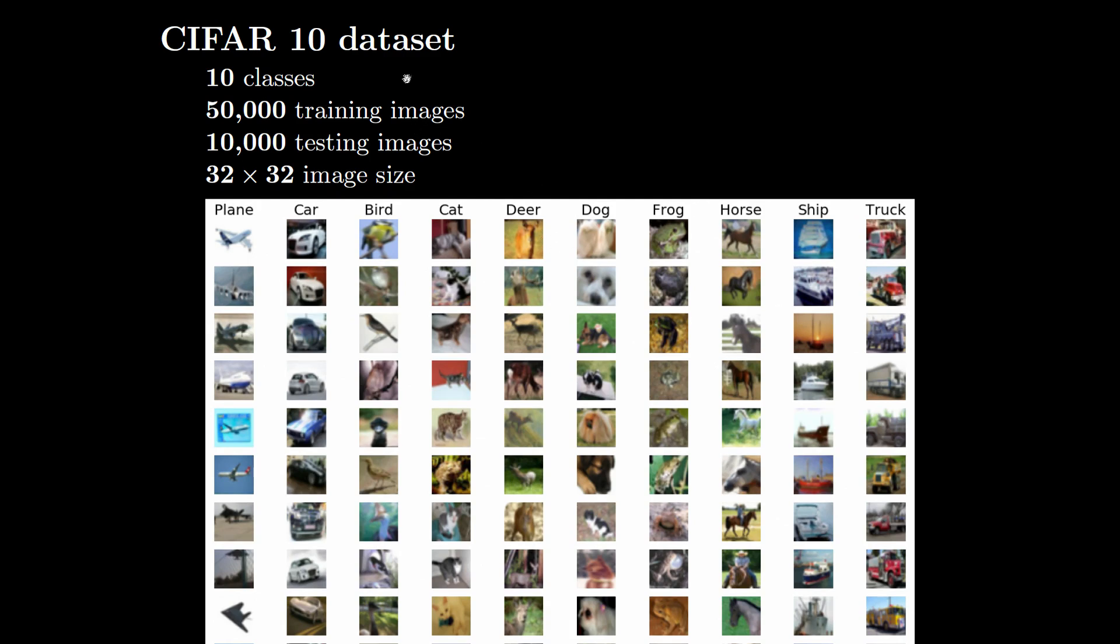We are using the CIFAR-10 dataset, that is, it has 10 classes: plane, car, bird, cat, deer, dog, frog, horse, ship, truck. These are the few training images that we have in the dataset. Overall, we have 50,000 training images, 10,000 testing images, and each image is of size 32 × 32.